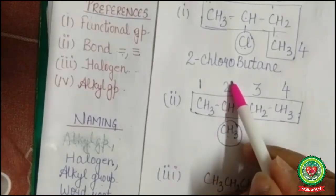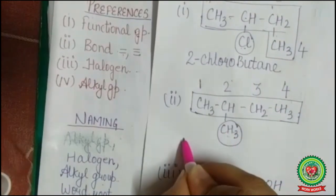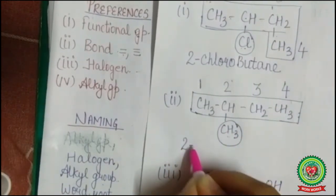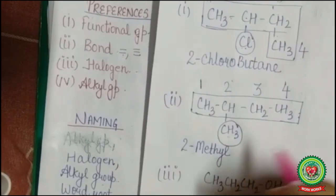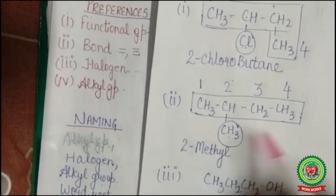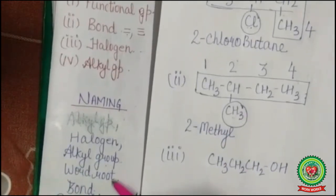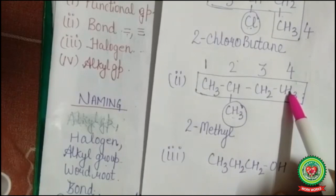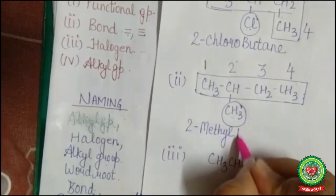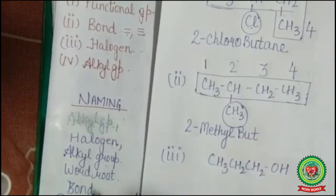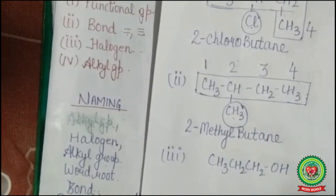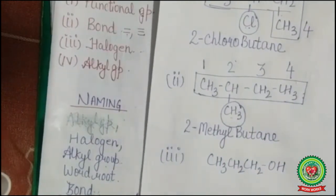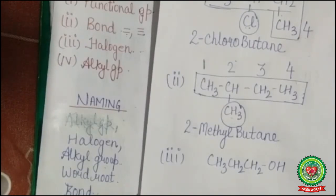CH₃ is methyl and it is attached to carbon number two, so we write '2-methyl'. Now the word root: four carbons, so we write 'but'. There is single bond between all carbons, so we write 'ane'. The name of the compound is 2-methylbutane.